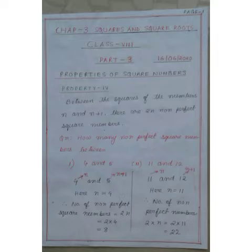Then the next number will be n+1, that is 9+1 is 10. So 9² is 81 and 10² is 100. According to the property, between 81 and 100 there are 2n, that is 2×9 = 18 non-perfect square numbers. Let us see if this is true or false.